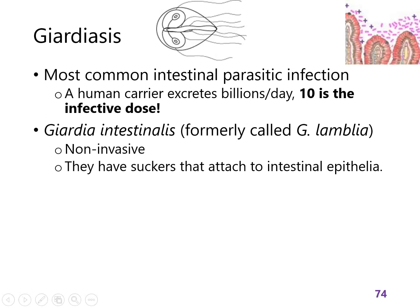Giardia lamblia, or Giardia intestinalis — its newer name — causes giardiasis. This is a line drawing of Giardia; if you look at it under the microscope you would see these features, and these are the flagella it moves around with. This organism is non-invasive — it lives along the epithelium in the small intestine and interferes with it.